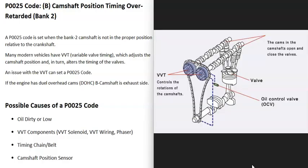The next thing that could cause this is what's called variable valve timing. Variable valve timing is used on many newer vehicles and helps the engine get better horsepower at different RPMs. It can also improve gas mileage. There can be different names for these systems, but if there's any kind of problem with the variable valve timing components, since they can adjust the timing, that could cause problems.